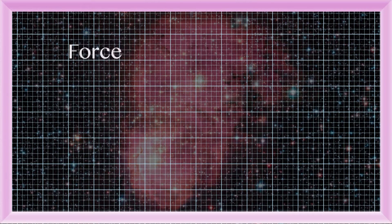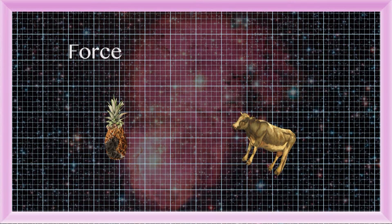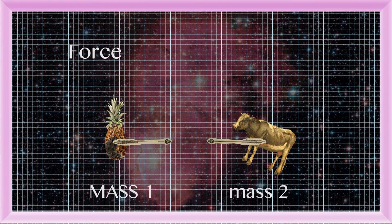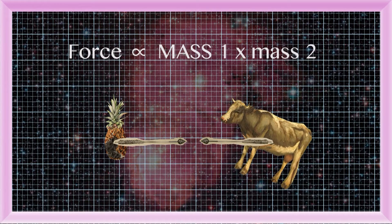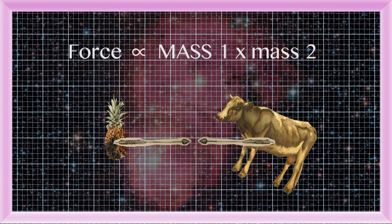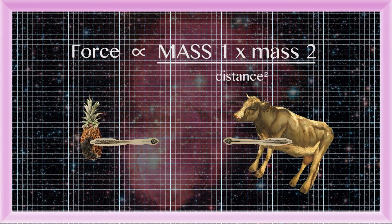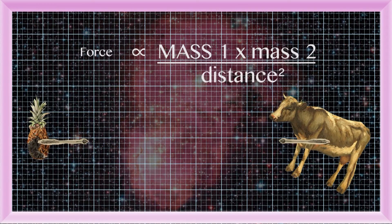He observed that the gravitational force was between two masses, any two masses, and that you've got a bigger force for larger masses. He also saw that the further these masses were apart, the weaker the gravitational force between them.